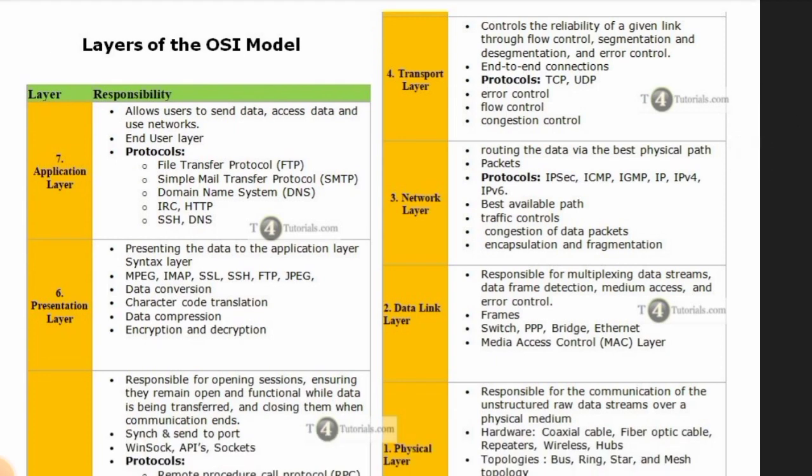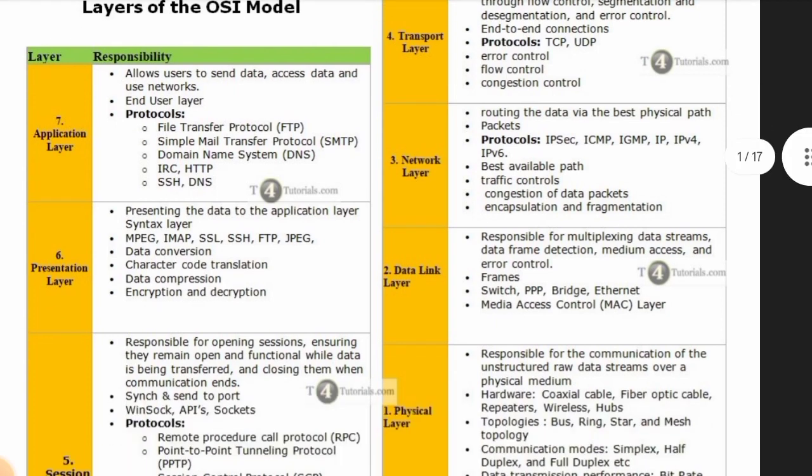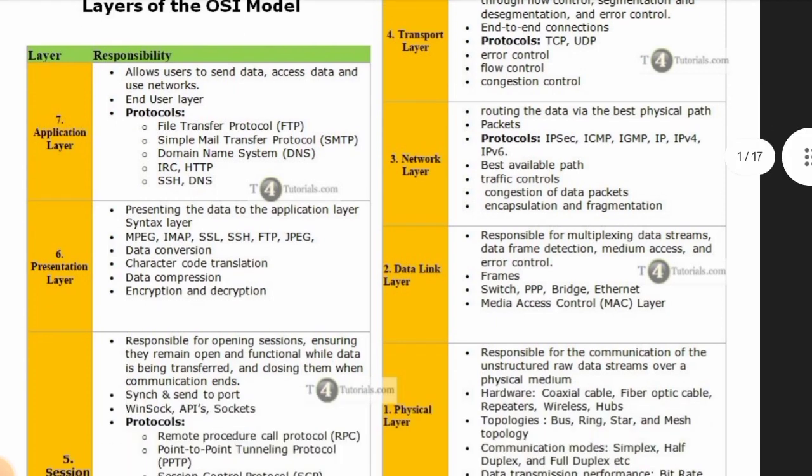Best available path, traffic controls, congestion of data packets, encapsulation and fragmentation — these are functions of the network layer.